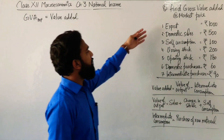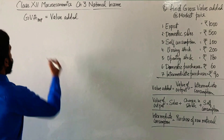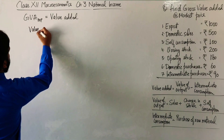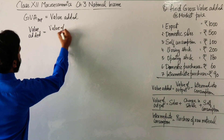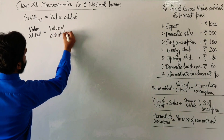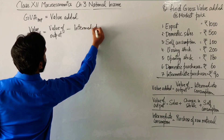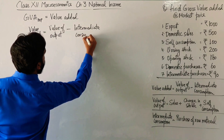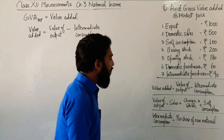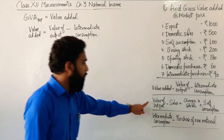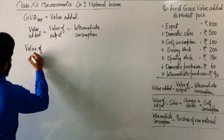Now, we have to calculate the value added. So what's the formula of value added? Value added is equal to value of output minus intermediate consumption. Now, students, what is the value of output here? We have to calculate the value of output. Let's calculate.